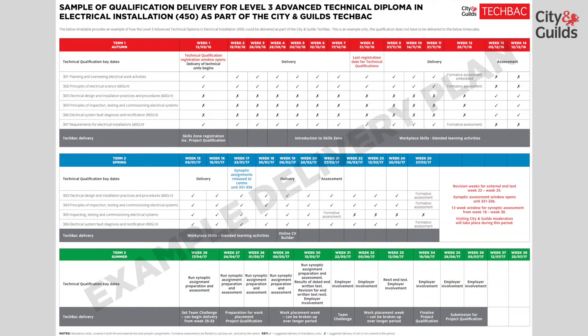I'm going to introduce you to the Sample Curriculum Plan for the Level 3 Advanced Technical Diploma in Electrical. Looking at the Sample Curriculum Plan, you'll see three terms shown in red, blue and green. The purpose of this Sample Academic Planner is to highlight the key dates that you will need to prepare your learners for their final assessments, ensuring that your delivery model fully prepares the learners for the practical end synoptic assessment and knowledge test.